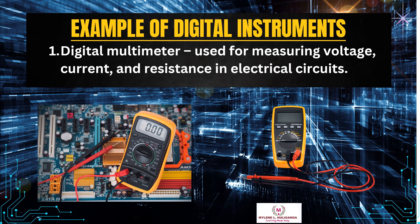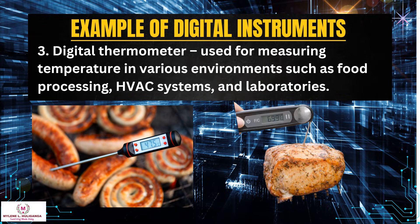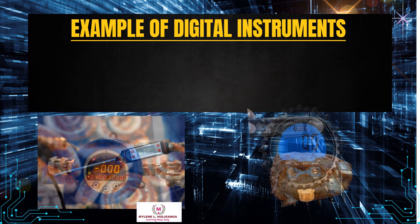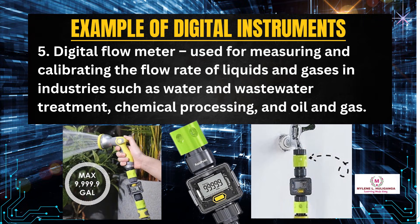Examples of digital instruments: 1. Digital multimeter — used for measuring voltage, current, and resistance in electrical circuits. 2. Digital caliper — used for precise distance, depth, and thickness measurements in engineering and manufacturing. 3. Digital thermometer — used for measuring temperature in environments such as food processing, HVAC systems, and laboratories. 4. Digital pressure gauge — used for measuring and calibrating pressure in gas and liquid systems in industries like oil and gas, automotive, and aerospace. 5. Digital flow meter — used for measuring and calibrating the flow rate of liquids and gases in water treatment, chemical processing, and oil and gas industries.